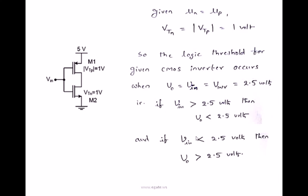So if V input is greater than 2.5V, then V0 is less than 2.5V. If V input is less than 2.5V, then V0 is greater than 2.5V. That is opposite is going to be taking place. Since it is CMOS inverter, inverse operation takes place from this point onwards. That is why this point is treated as logic threshold.